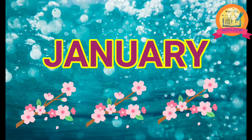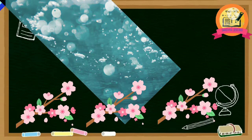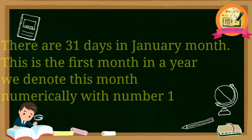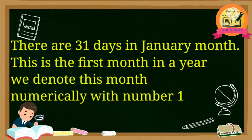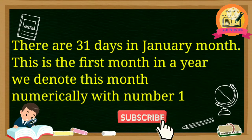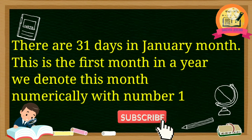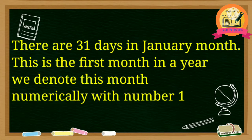January — J-A-N-U-A-R-Y. There are 31 days in January month. This is the first month in a year. We denote this month numerically with number 1.